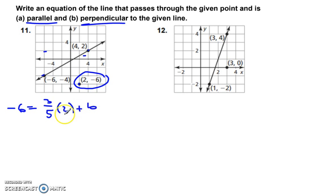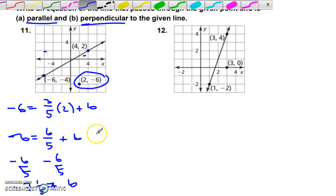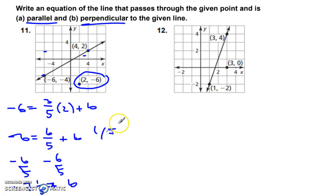Same procedure. We've got 6 over 5 here plus b. Negative 6 there. Subtract 6 over 5 from each side. Okay. That's 1 and 1 fifth. So if we subtract that, we get negative 7 and 1 fifth plus b equals b. So y is equal to 3 fifths x minus 7 and 1 fifths or 36 fifths. Either way you want to write it.